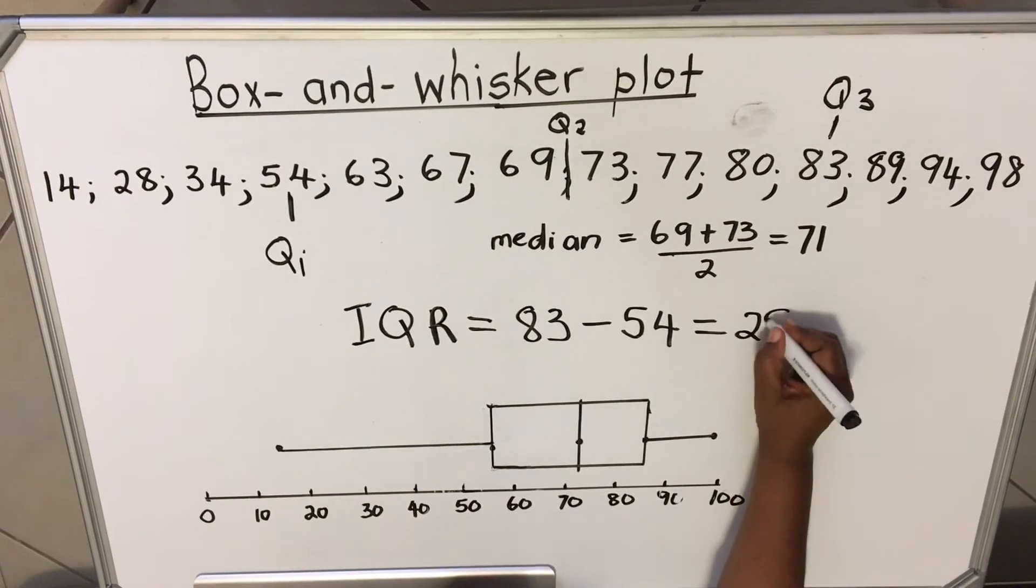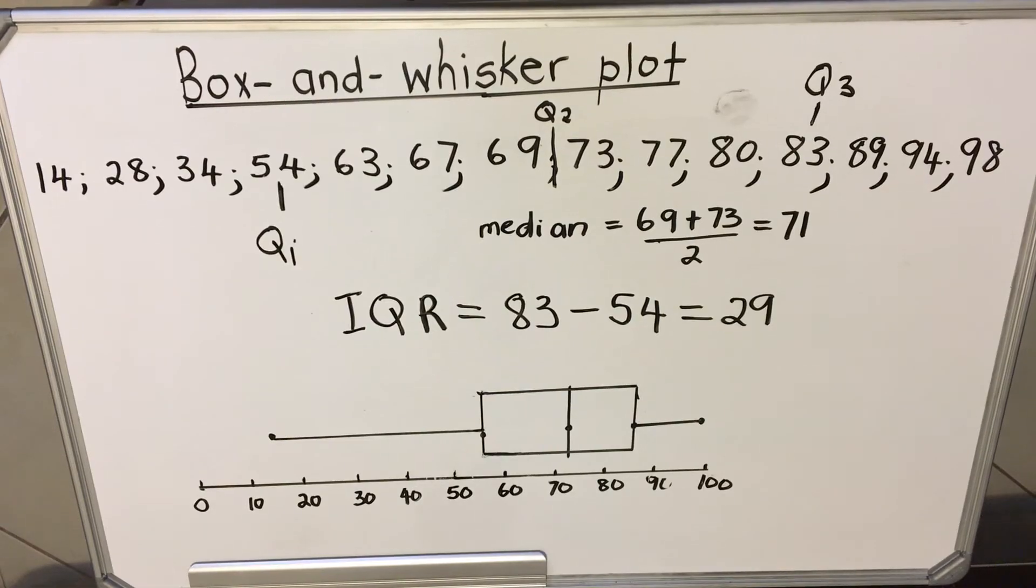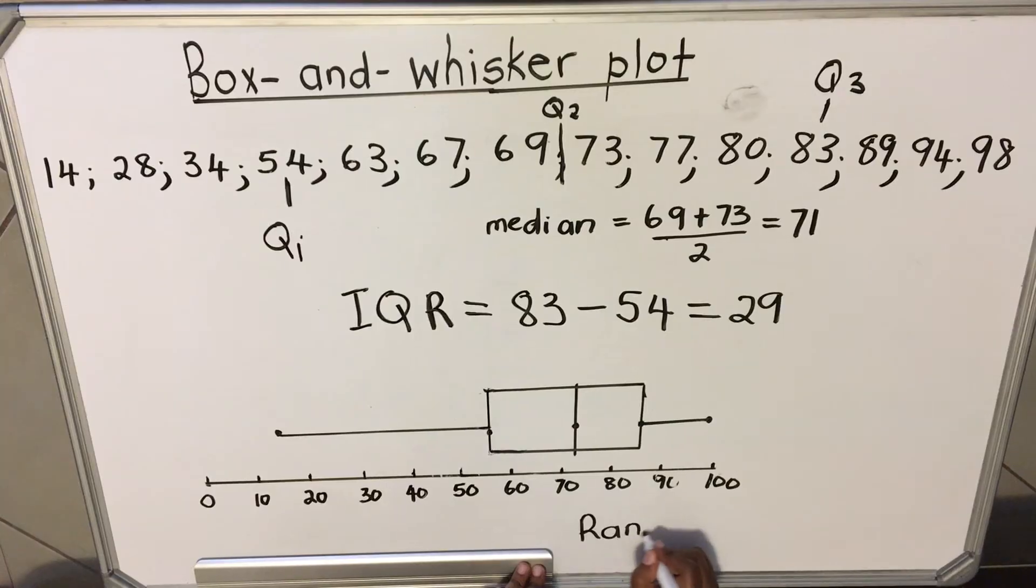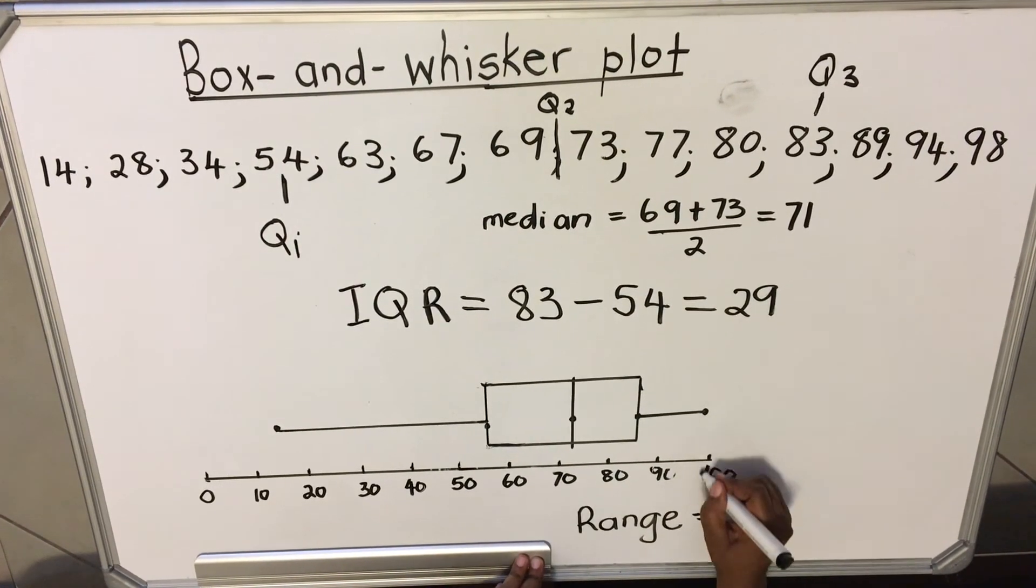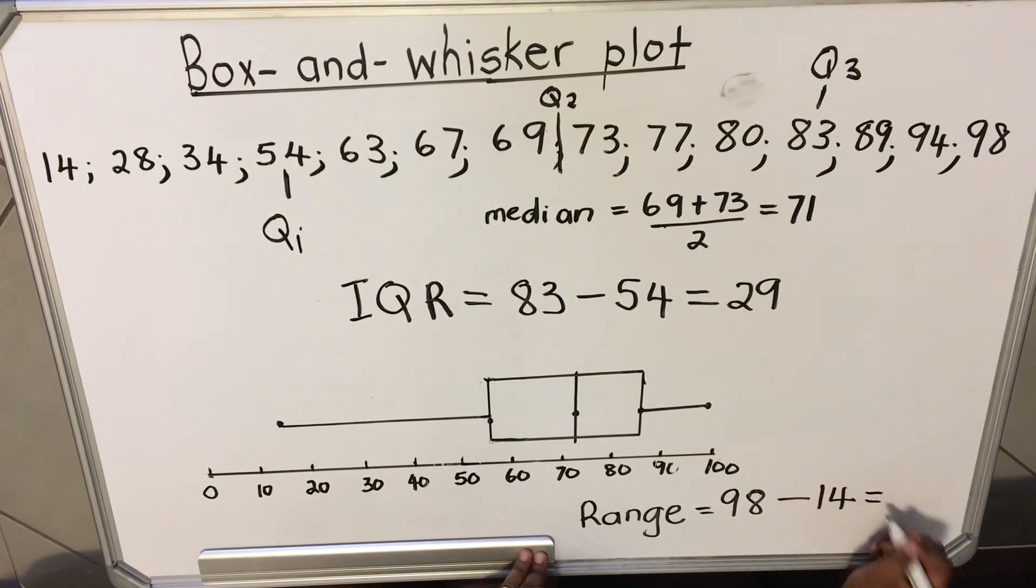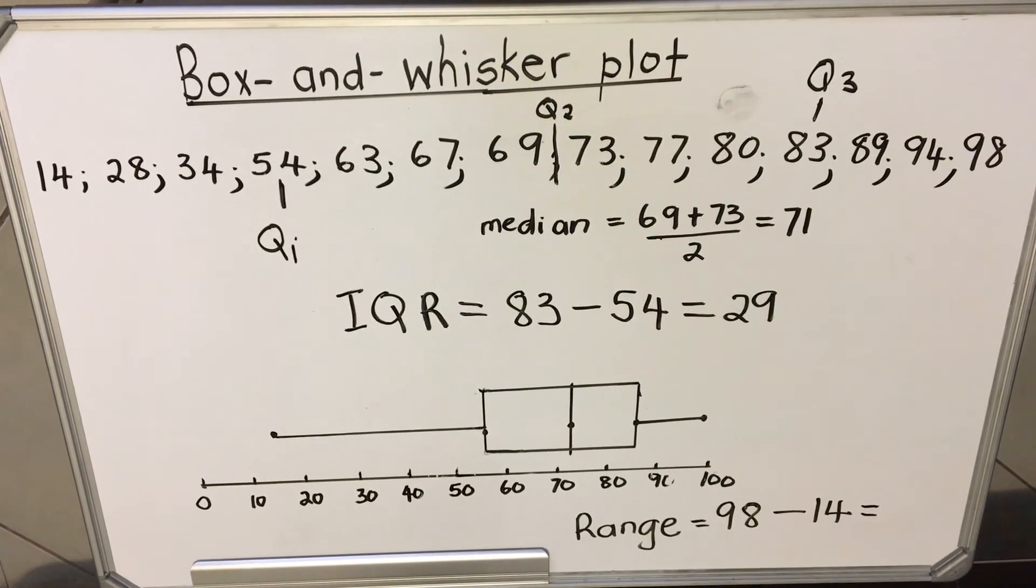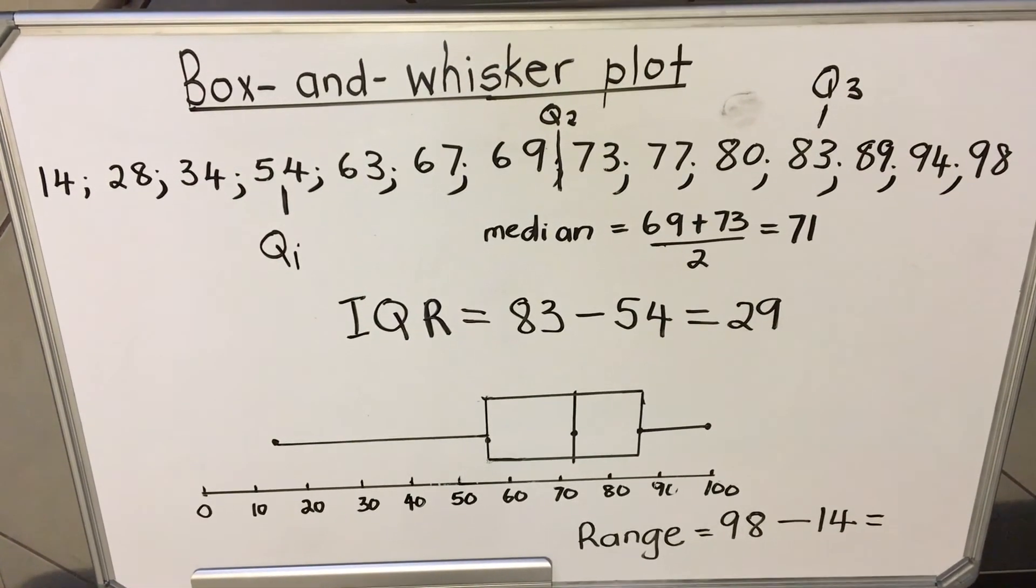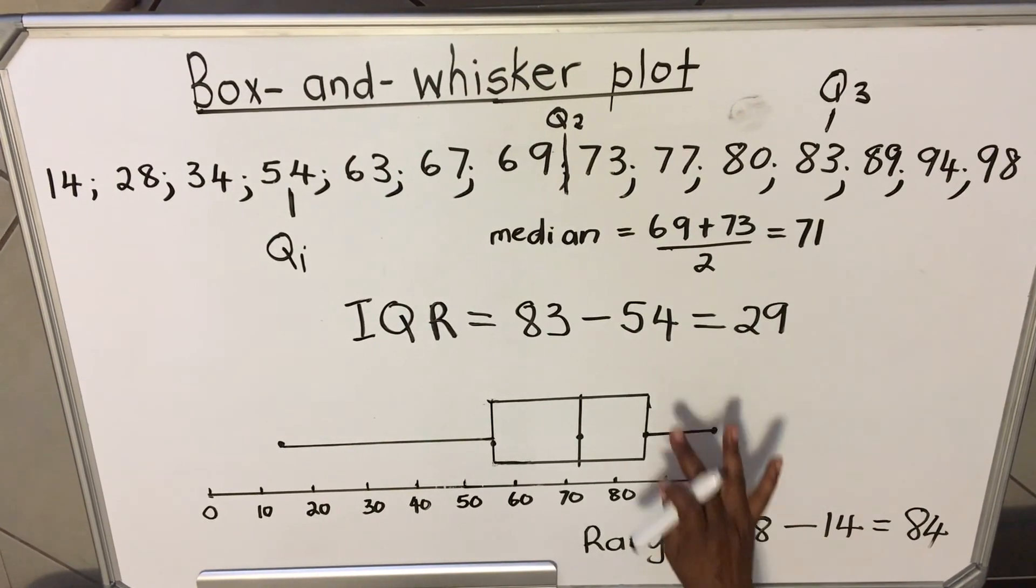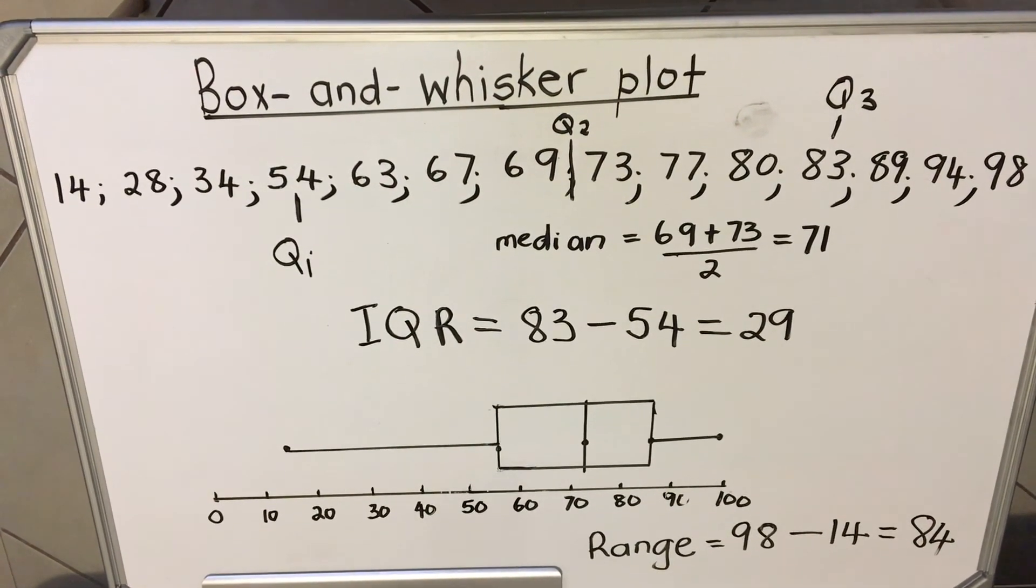Let's say they ask you the range and all the data is not there, you are only given the box-and-whisker. So your range, the range is the highest value - so your highest value is 98 - minus the lowest value, which is 14. Then you punch it in your calculator. Always use your calculator: 98 minus 14, and then you find that it's 84. That's your range. You see, your range is different from your inter-quartile range, and the interpretation of the two values is also different.